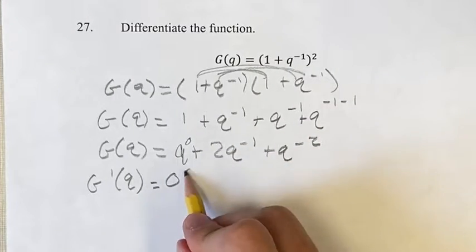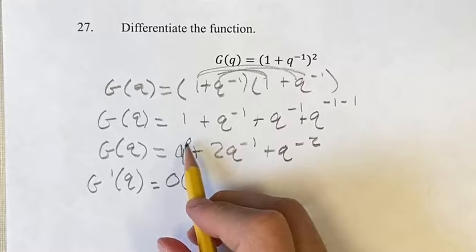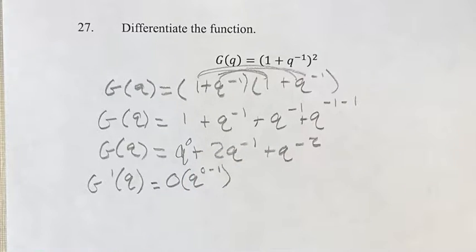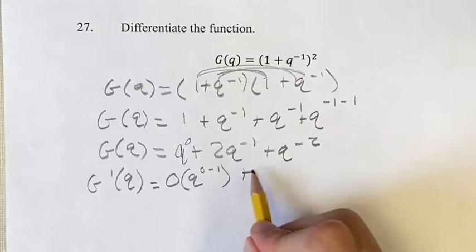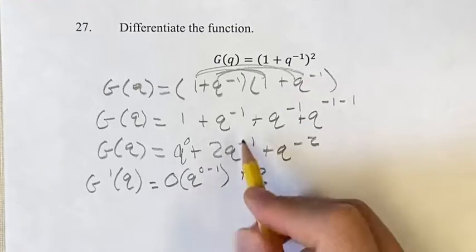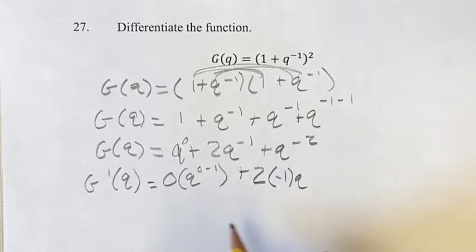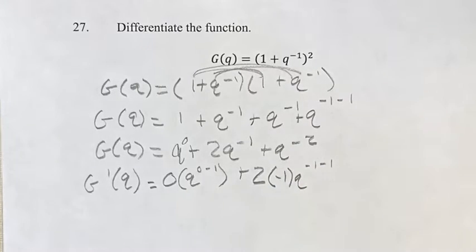bring it down, times q, and then you subtract 1 from the exponent to get your new exponent. Plus 2 is just a coefficient; again, we're bringing down the exponent into the coefficient, plus our new exponent, we're subtracting 1.